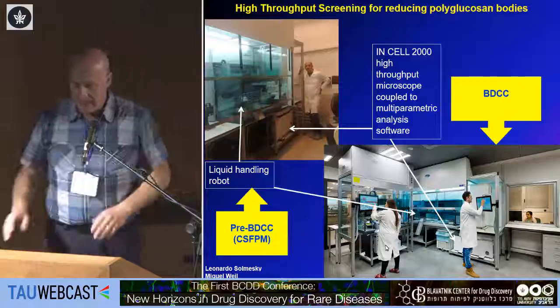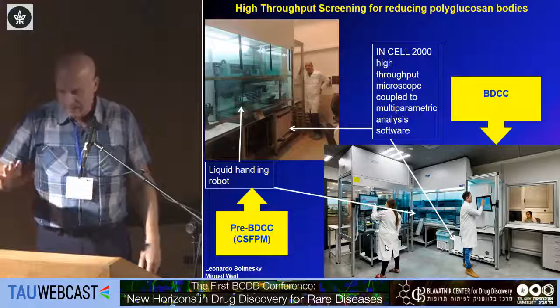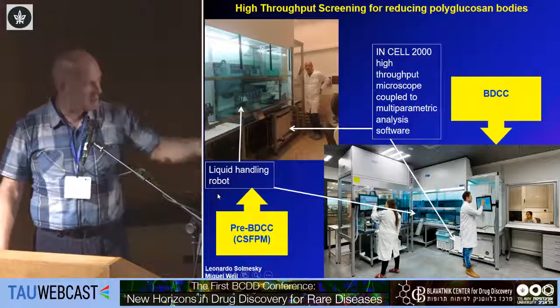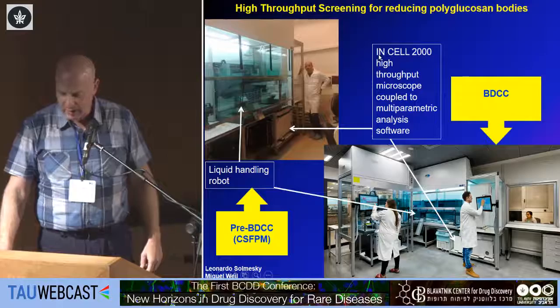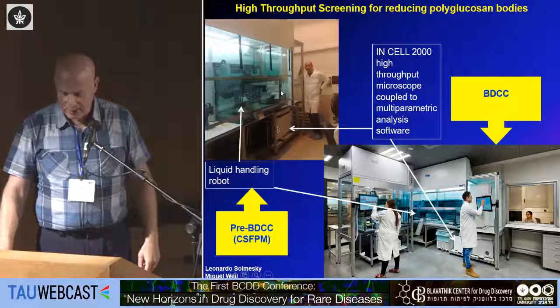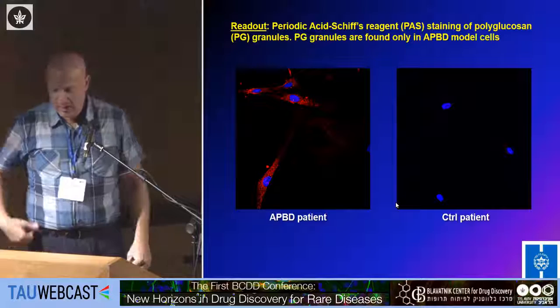About three years ago, I contacted Miguel and proposed a high-throughput screening approach — buying a naive drug library. At the time, the center had a liquid handling robot conjugated to the Incell high-throughput microscope. Now the new center has a more advanced version of the Incell. Our readout, and the basis of the entire screen, was that you can selectively identify polyglucosans and differentiate them from glycogen.